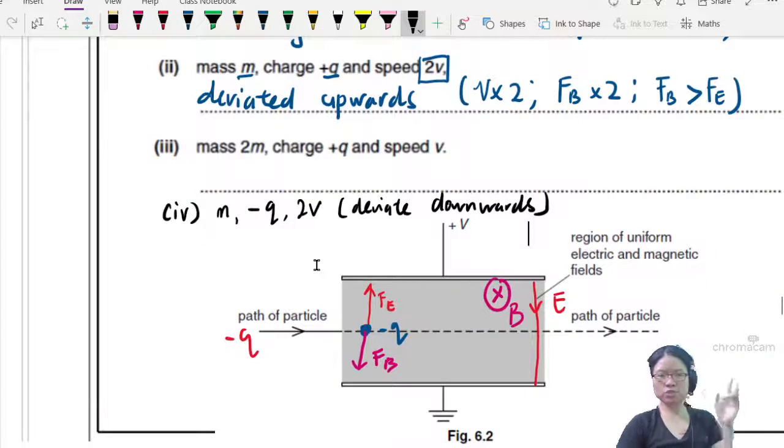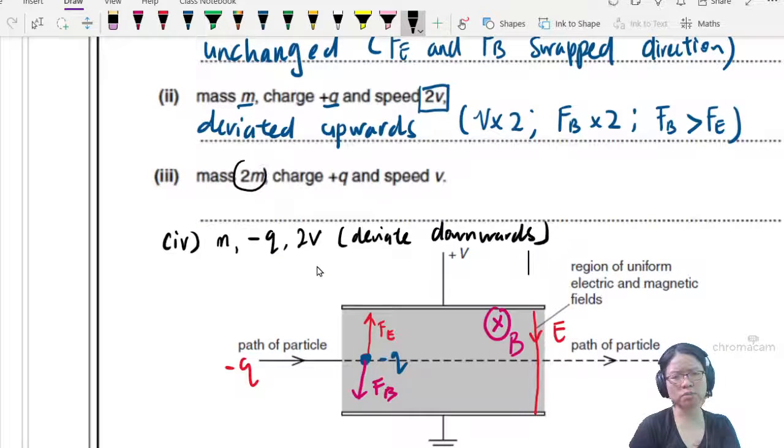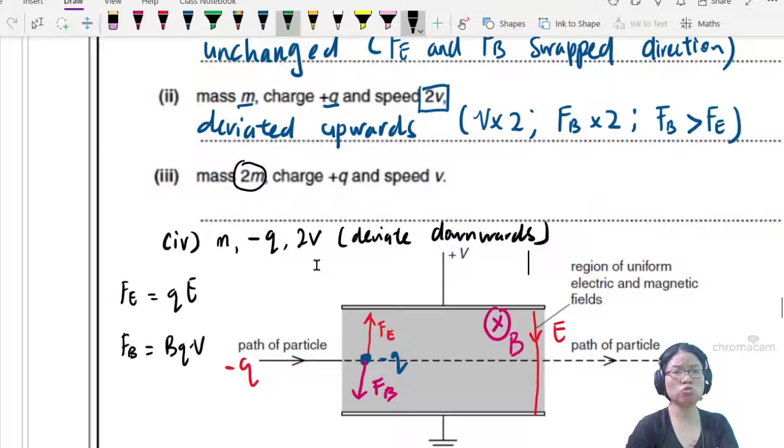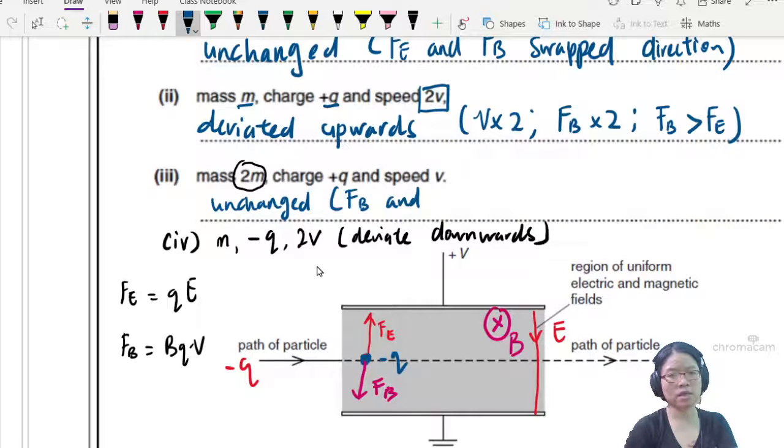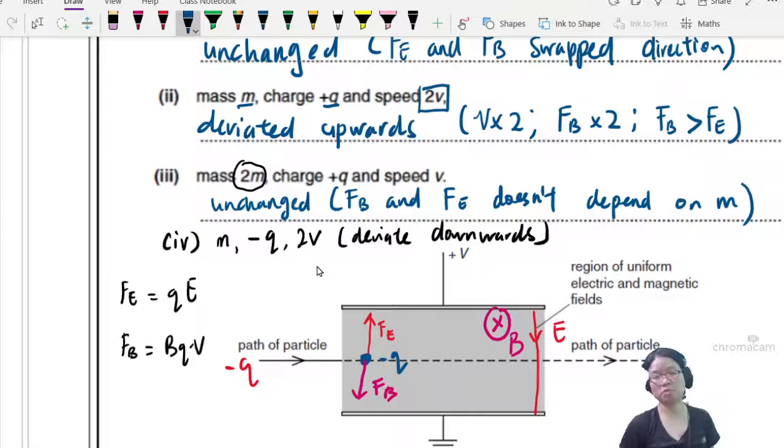Next, mass 2M, charge positive Q, and speed V. Let's again consider the equation. When you change the mass, did you change your electric force? No, Fe equals QE, no change. Did you change your magnetic force? BQV, also no change. So this one will remain unchanged. Because both FB and Fe doesn't depend on M. There's no value of M inside the equation. The only time where the mass of the particle comes into play is when you are moving in a circular path, because centripetal force has the value of M inside. You can use the equation to help you decide when is M a factor. In this case, FB and Fe, M is not a factor.